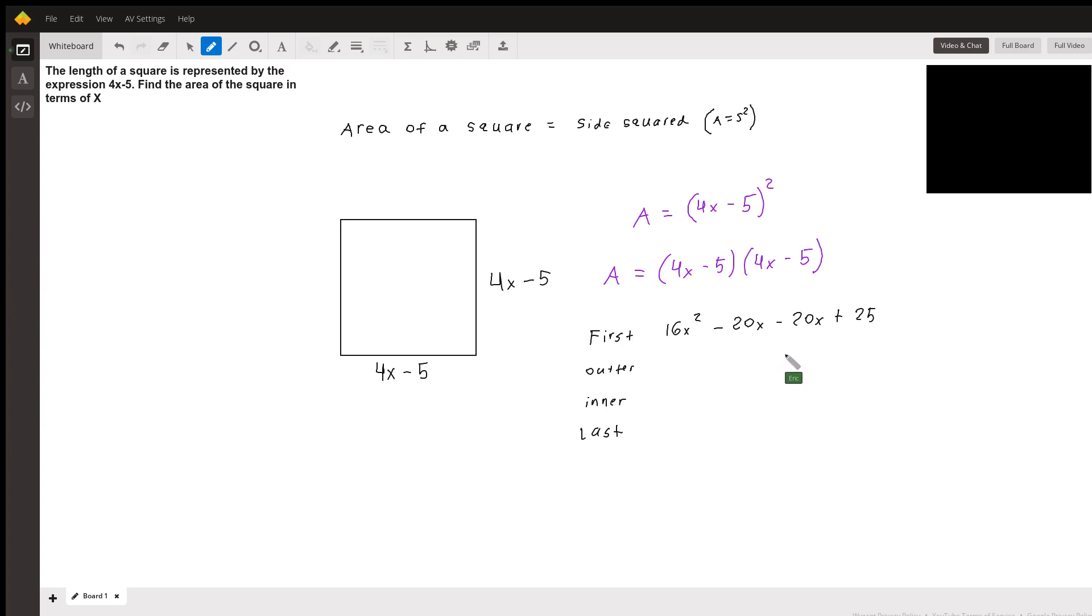Now just clean this up by simplifying. So we have 16x squared minus 20x minus 20x simplifies to minus 40x plus 25. So this is going to be the area of our square in terms of x.